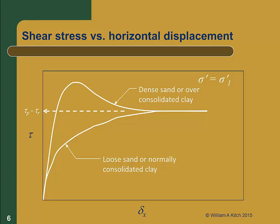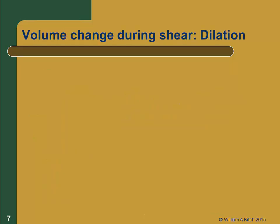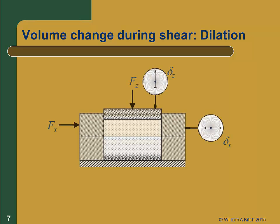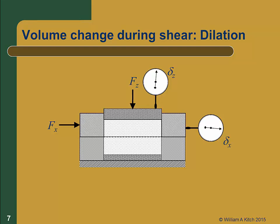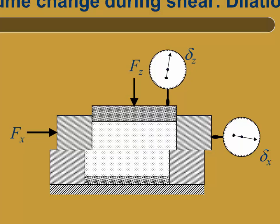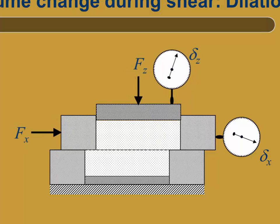Remember that the normal stress during a direct shear test remains constant. As we just described, the soil will usually change volume during the shearing process. We can measure this volume change in a direct shear test by observing the vertical displacement during testing. Because the cross-sectional area of the specimen does not change, any change in volume will generate a vertical displacement in the specimen. If the soil is dense, it will dilate or increase in volume during shear, and the displacement at the top of the specimen will be upward, as we see here.